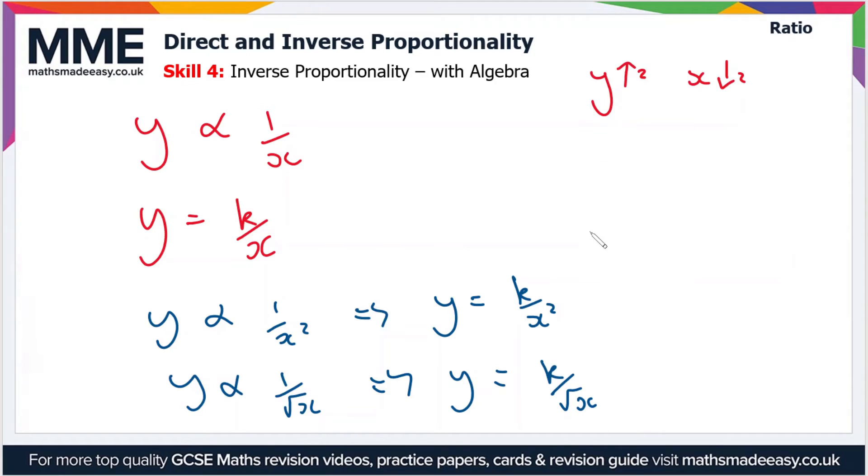It's quite simple really. Like I say, if you're given two values for y and x, you can work out the value of k. Then you can use the value of k to work out the value of y for any value of x, and vice versa.